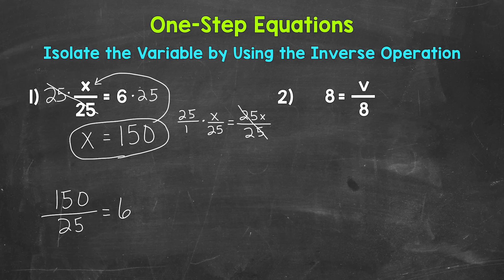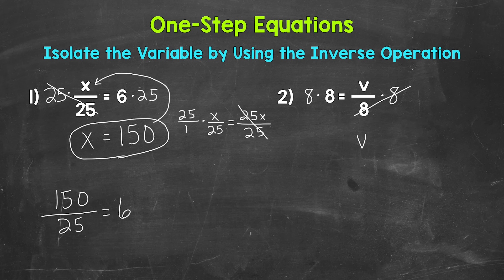Let's move on to number 2, where we have 8 equals v divided by 8. Now we need to isolate that variable of v. v is being divided by 8, so we need to undo that division by using the inverse operation. The inverse of division is multiplication, so let's multiply the right side of the equation by 8. Now whatever we do to one side of the equation, we must do to the other. So we need to multiply the left side of the equation by 8 as well. Now let's take a look at the right side of the equation. We are dividing by 8 and multiplying by 8. So these 8s cancel out. They equal 1. That gives us 1v, which is just v. So the variable is now isolated. v equals, and then on the left side of the equation, 8 times 8, that equals 64. So v equals 64. And we can rewrite this with the variable coming first.